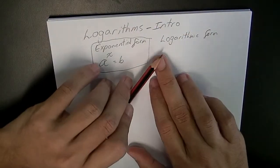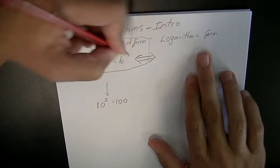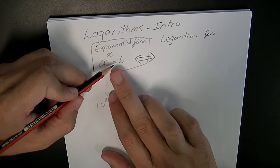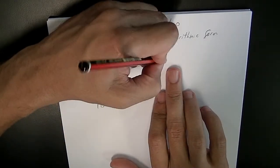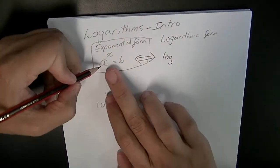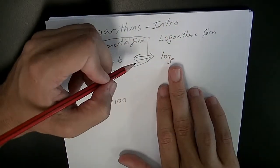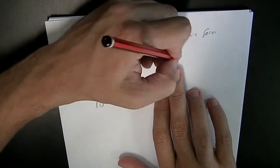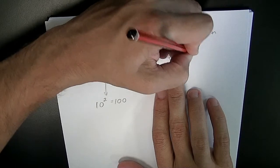If we were to write a to the power of x equals b in logarithmic form, it would look like log base a (that's a little subscript a underneath the log) of b is equal to x.